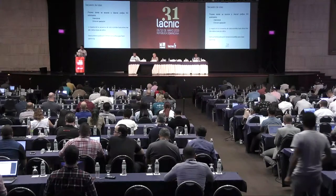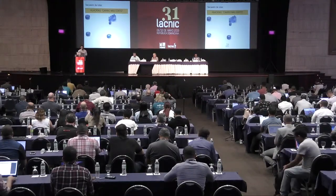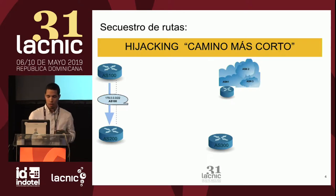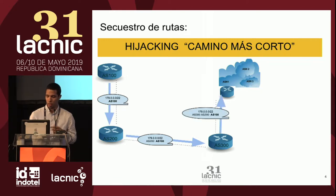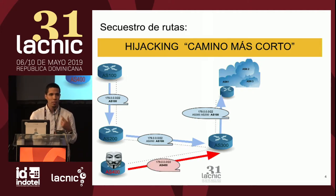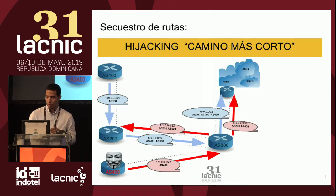La idea es ir viendo el paso a paso e identificar qué sucede durante el proceso. El primero es hijacking por camino más corto. En este caso tenemos el AS100 que anuncia el prefijo 179/22, el AS200 lo aprende y lo propaga, y el AS300 hace lo mismo. En el medio aparece un atacante, el AS400, que anuncia el mismo prefijo, pero a través del AS400. El AS300 lo aprende y lo propaga.